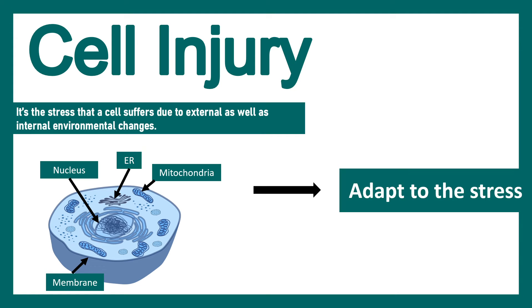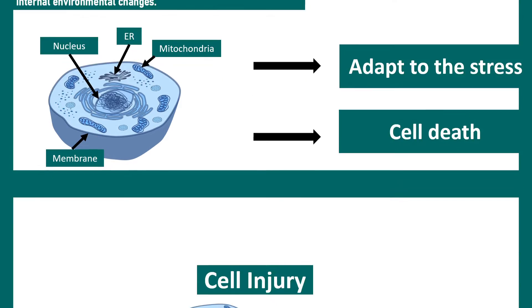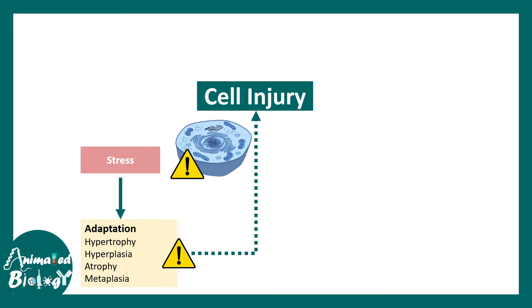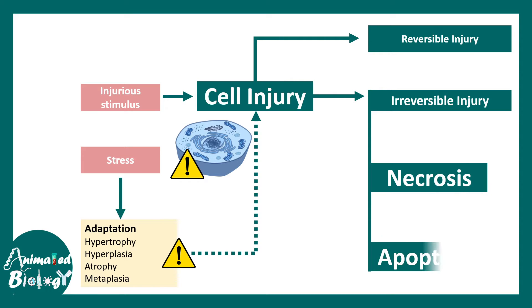There are different outcomes of cellular injury. The cell would obviously try to adapt to the stress and overcome it, but in extreme cases when the injury is irreversible and irreparable, the cell has to die. Cell injury could be reversible as well — it's not always irreversible — but sometimes the injurious stimulus is so strong that a reversible process is not possible. In that case, death is inevitable, so necrosis or apoptosis happens.